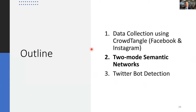One advantage of importing CrowdTangle datasets into Communalytic is that you can assess the level of toxicity toward a particular news story using the Perspective API. This brings us to the second topic: two-mode semantic networks, and how to use them with data from CrowdTangle as well as Twitter and other platforms. Any questions about CrowdTangle before we continue?